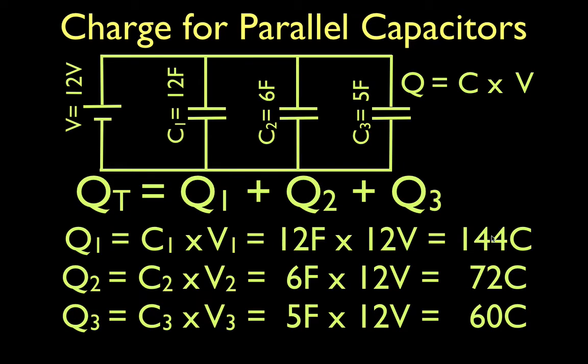Now, in order to get the total, of course, we just add them up. We found the amount of charge stored on capacitor number one, capacitor number two, and capacitor number three, and our equation tells us all we have to do is add them up and we get the total. That means that if we add them up, we get 276 coulombs.